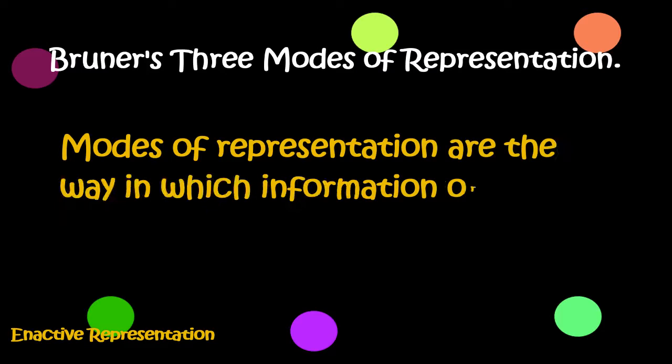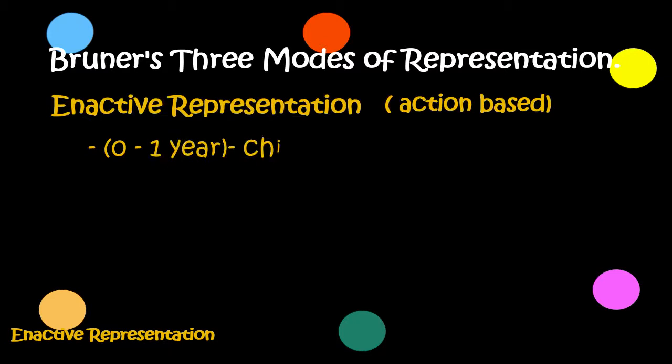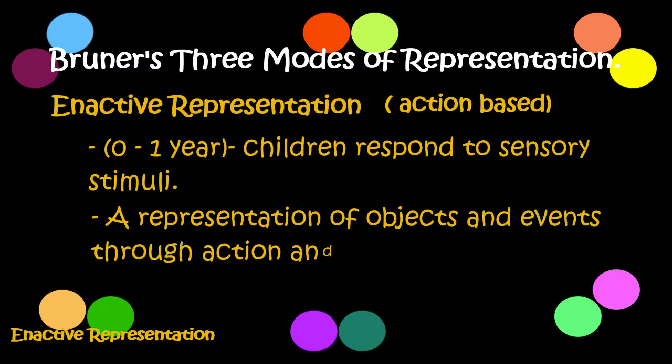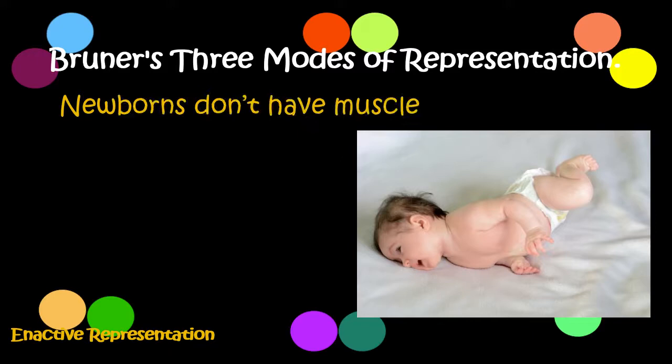Enactive representation (0 to 1 year): children respond to sensory stimuli — a representation of objects and events through action and movement. Examples are muscle memory, like that of shaking a rattle. For instance, newborns don't have muscle memory for activities like crawling, scooting, or walking.